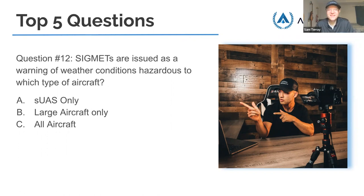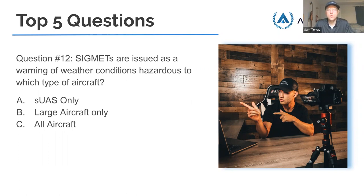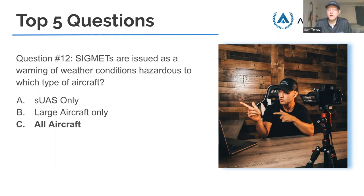Question 7: SIGMETs are issued as a warning of weather conditions hazardous to which type of aircraft? SIGMET stands for significant meteorological event. The answer is C — all aircraft. SIGMETs don't just apply to airliners — they apply to small planes like Cessnas and to you as a drone pilot. You have an unmanned aircraft, so it applies. They typically warn about thunderstorms or turbulence.